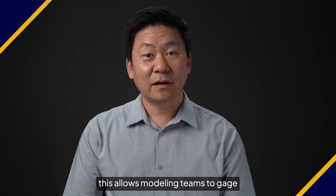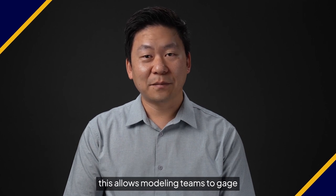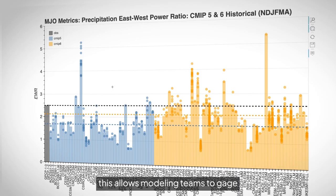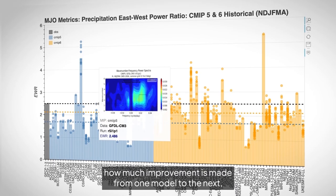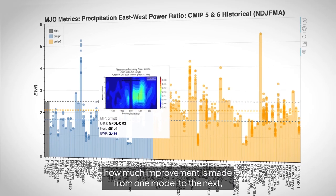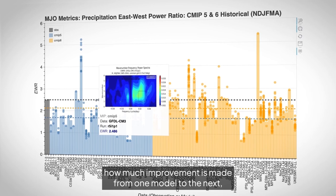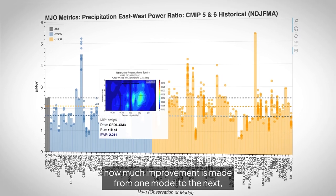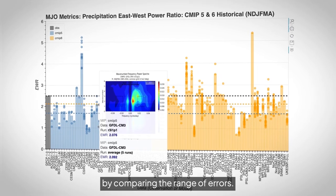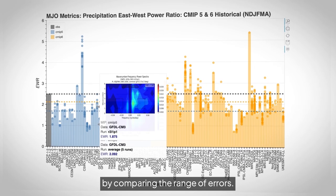Because models are ever-evolving and improved upon, this allows modeling teams to gauge how much improvement is made from one model to the next by comparing the range of errors.